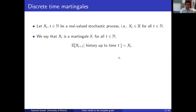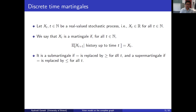A process with this property — that the conditional expectation given a sufficiently detailed history up to time t equals the current value — is called a martingale. For completeness: if the equality is replaced by greater than or equal to for all possible times and histories, this is called a sub-martingale. And if it's replaced by less than or equal to, it's called a super-martingale. These processes are also interesting and important, but for this course we just need martingales.